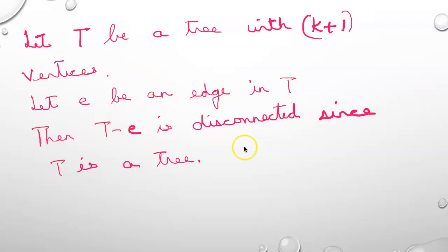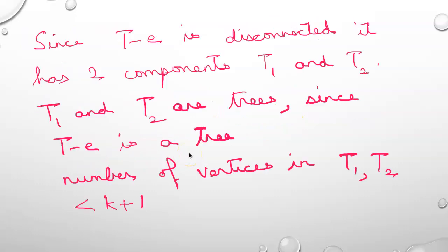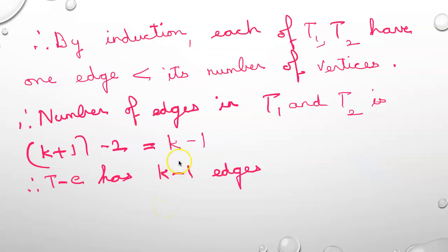Let E be an edge in T. Then T-E is disconnected because T is a tree. Since T-E is disconnected it has two components, say T1 and T2. T1 and T2 are trees. The number of vertices in T1 and T2 is less than k+1, so by induction each of T1 and T2 has one edge less than its number of vertices. So the total number of edges in T1 and T2 put together will be k+1 minus 2, which is k-1.